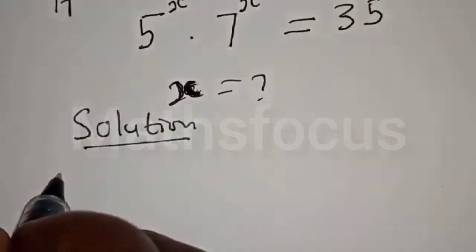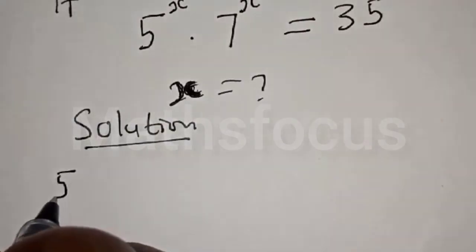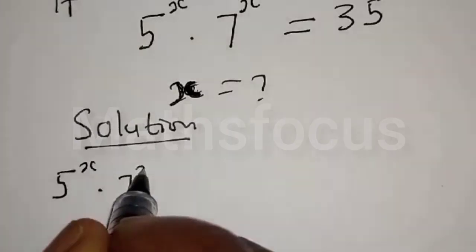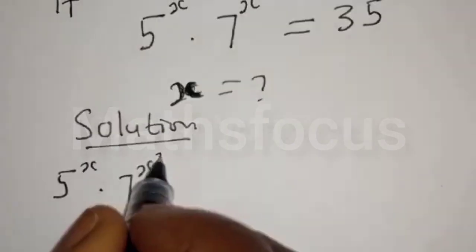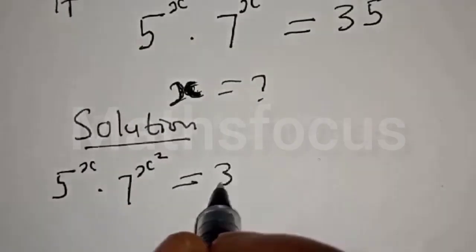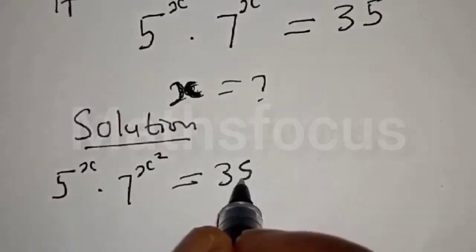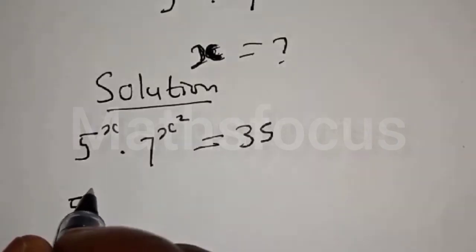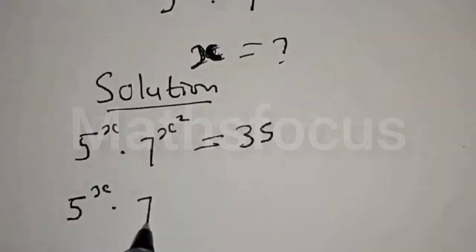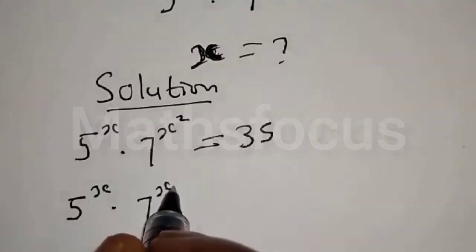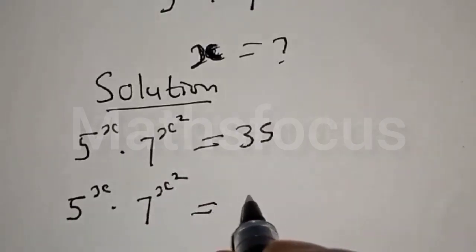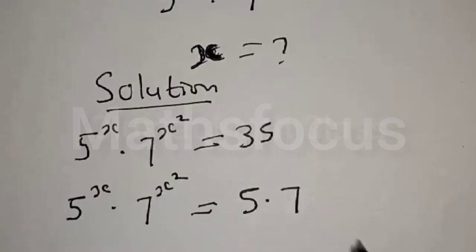We have 5 raised to power x multiplied by 7 raised to power x squared is equal to 35, which is 5 multiplied by 7.